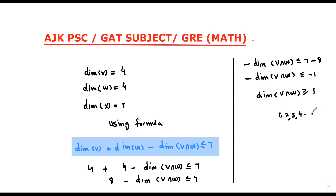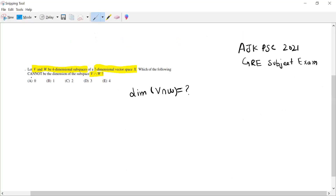The dimension can be any number from one up to seven. Since our answer choices are zero, one, two, and three, and dimension of V∩W must be greater than or equal to one, the dimension can never be zero. So option A (zero) is the correct answer — it cannot be the dimension of V∩W. Please subscribe to my YouTube channel, click the bell icon, and share the video with friends. Thank you.